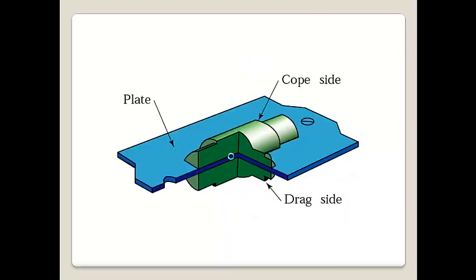If the cost incurred in the pattern is more, we should ensure that the number of components produced is more in order to reduce the cost of the manufactured products. In detail, we can have a look at the pattern here — it's a plate which divides two halves of the pattern, one on the cope side and one on the drag side, as seen in the video in the first lecture.